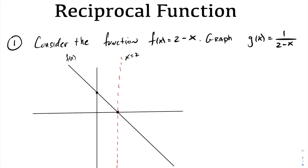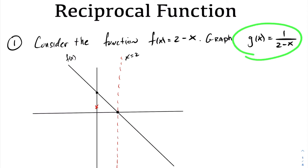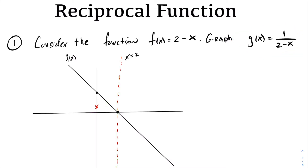Likewise, we know that we have a y-intercept at 2. Therefore, the reciprocal will have a y-intercept at 1 half — if you flip the value of 2, it gives you a half. So now we have a reciprocal function that has a vertical asymptote at 2 and a y-intercept of one half.